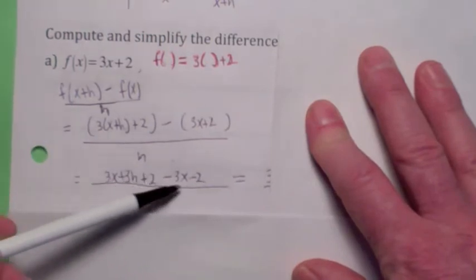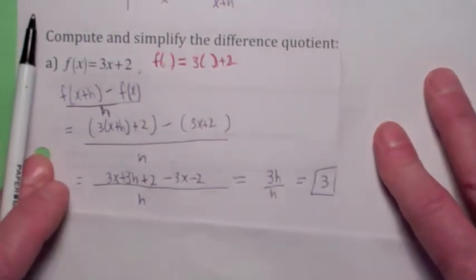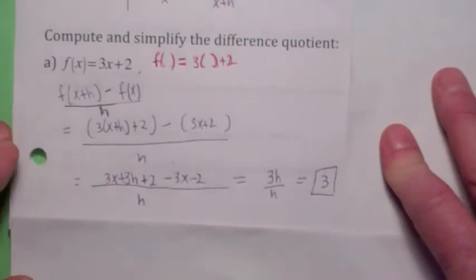3x's cancel, 2's cancel. You have 3h over h, which, lo and behold, is 3.